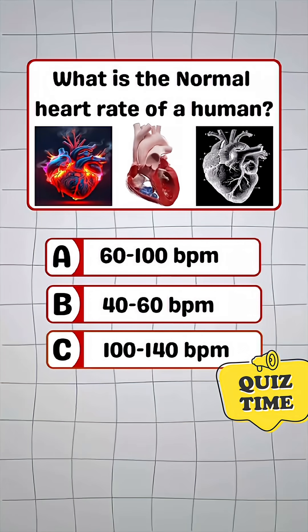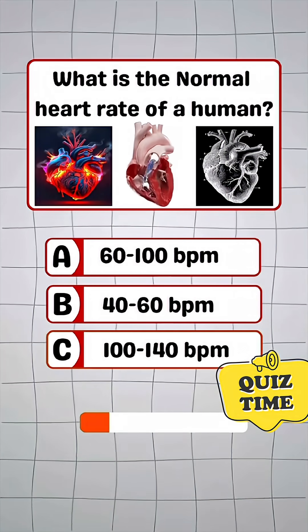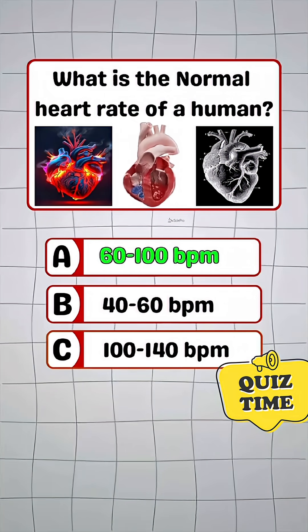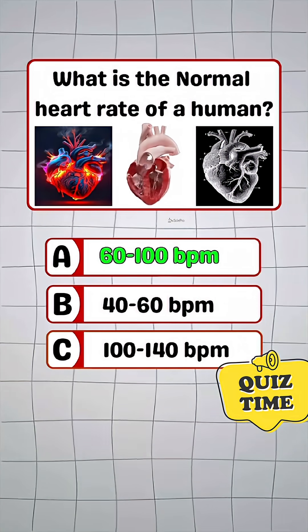Question 2. What is the normal heart rate of a human? Answer A. 60 to 100 beats per minute.